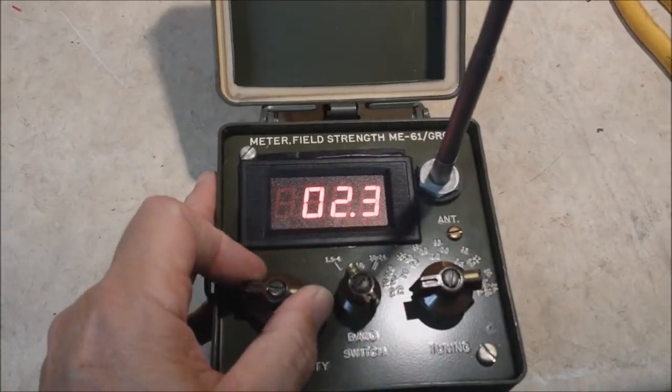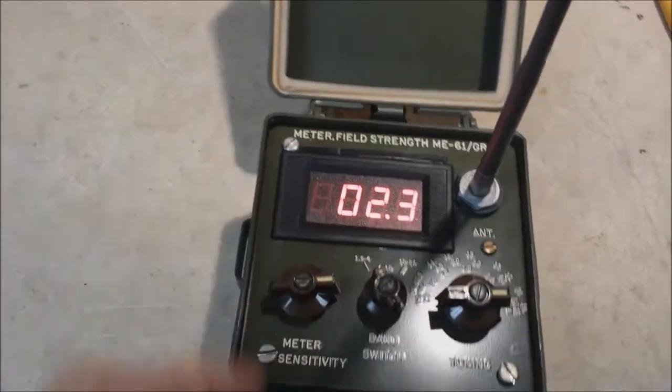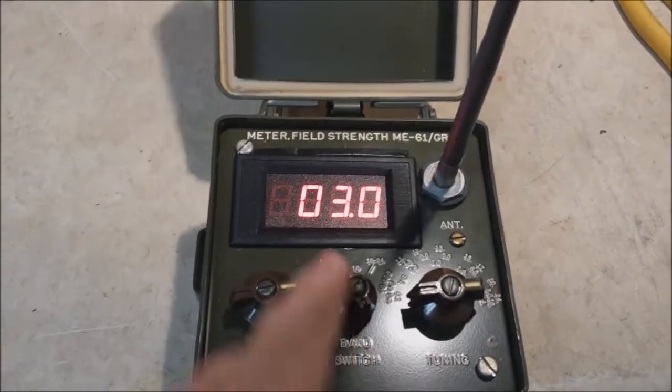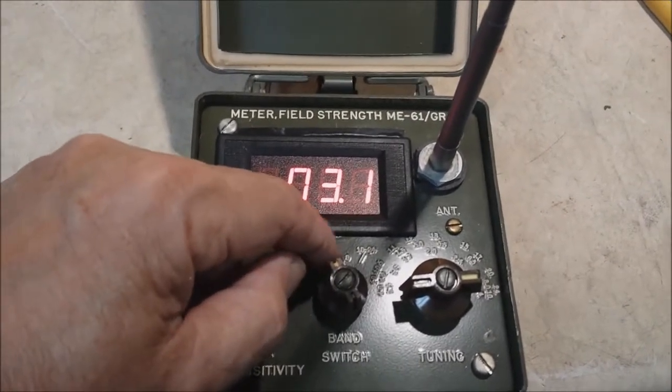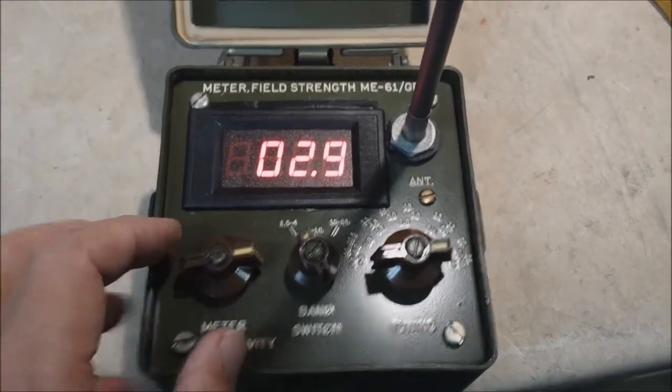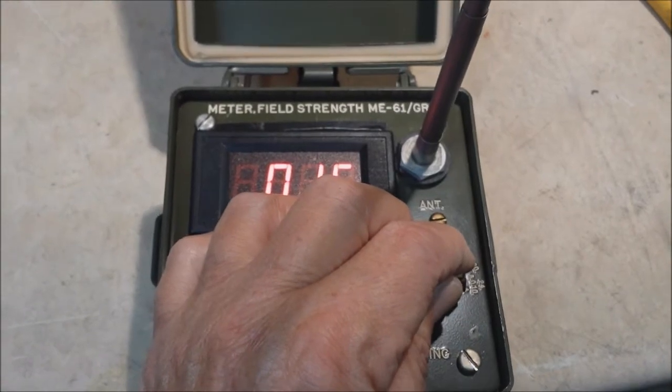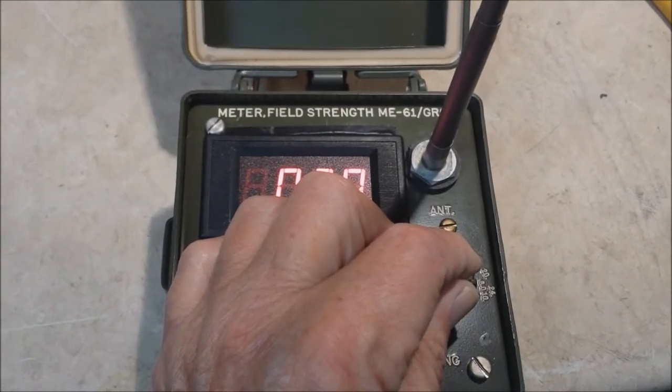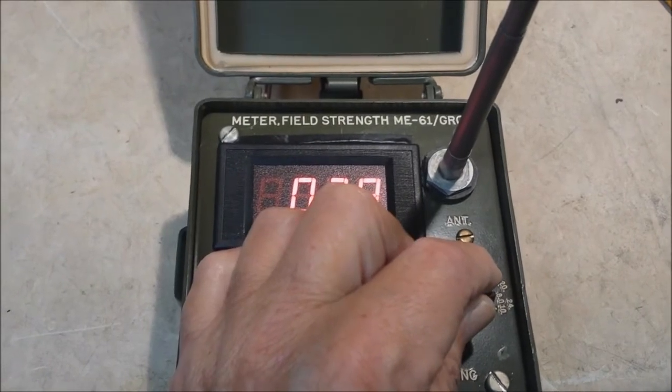This is a sensitivity control, so if I turn this down I can make my signal weaker. And of course this is tunable. This has three bands: 1.5 to 4, 4 to 10, and 10 to 24 megahertz.